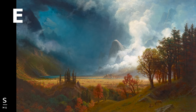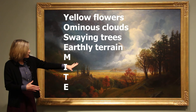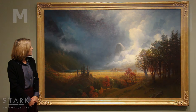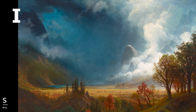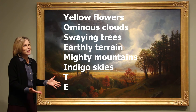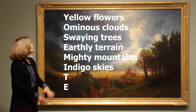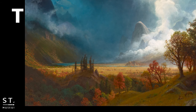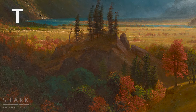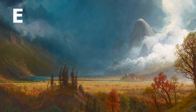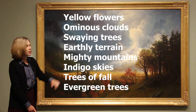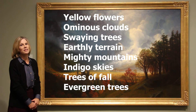For E, I get a sense of earthly terrain — do you see the terrain is sloping? I see a lot of earth. For M, of course we have these mighty mountains. For I, I see indigo skies — indigo is a fancy word for blue, and we definitely see a deep indigo blue up in that sky. For T, I see trees in many different colors, so maybe 'trees in fall.' And then E again — I see evergreen trees. Some of these trees are going to lose their leaves because it's fall, but some will be green all year long.